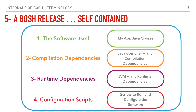It's also important to mention that a BOSH release should be self-contained. So it should contain the actual software itself that we need to run, the compile-time dependencies for that software, and also the runtime dependencies. In addition to that, it should contain the configuration scripts that tell BOSH how to run it, how to compile it, and how to configure the software itself. Don't worry if this sounds a bit confusing for now — we will cover that in detail later on.